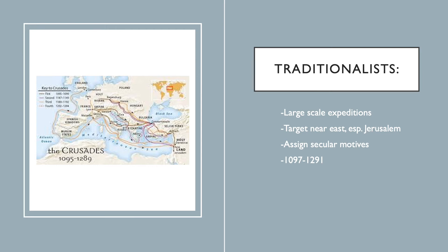For example, the first crusade army set out in 1098. Before those large-scale armies, you actually have mass movements of people, but traditionalists don't include them because the people involved don't meet the criteria. The first crusade is that large-scale military expedition led primarily by knights and nobles. There are up to nine crusades, depending on who's counting. Traditionalists also don't include smaller-scale individual crusades — for example, in 1101, a smaller but significant movement went toward Jerusalem. Their destination has to be Jerusalem.